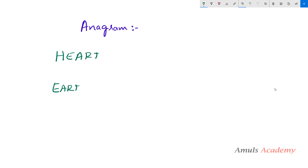Both these strings contain the same characters: h, e, a, r, t. So both strings contain the same characters but the order of characters is different. That's why 'heart' is the anagram of 'earth', and 'earth' is the anagram of 'heart'.